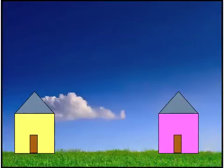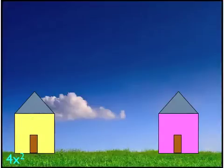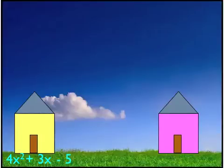We can multiply polynomials this way. Think of each polynomial as a family, with terms being the people. Each term in the first polynomial is going to greet each term in the second polynomial. In my first house I have 4x squared, 3x, and negative 5. In the second house I have negative 2x and positive 7. We want to multiply these together.